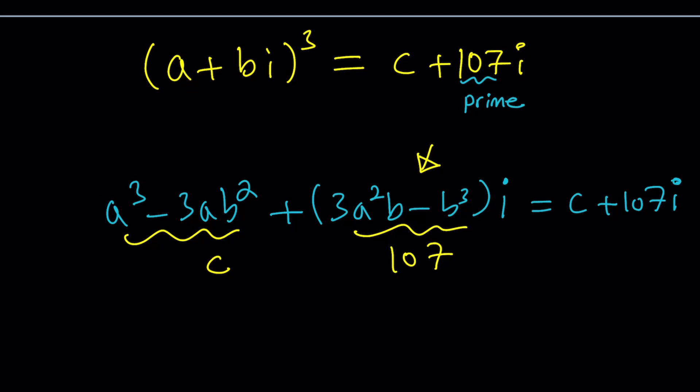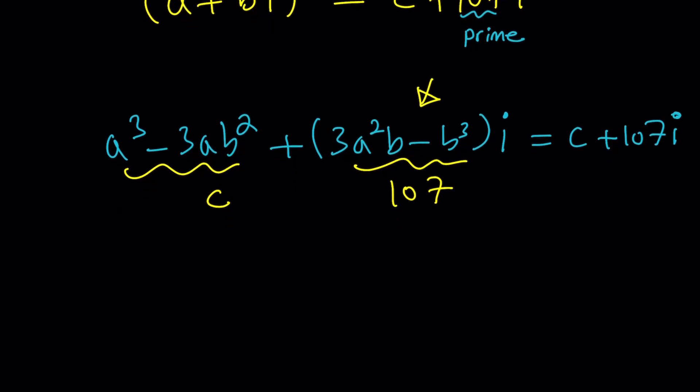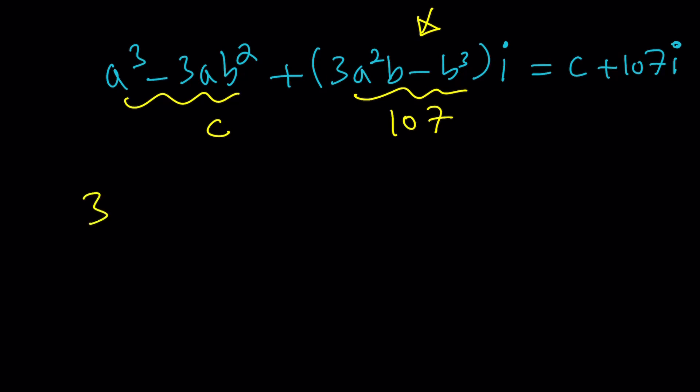That's what's really powerful about these because if you think about ABC being real, there are infinitely many solutions, aren't there? So let's go ahead and start with this. 3A squared B minus B cubed equals 107. Again, remember 107 is prime.